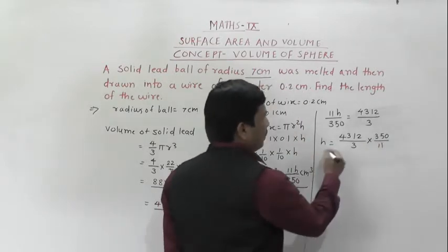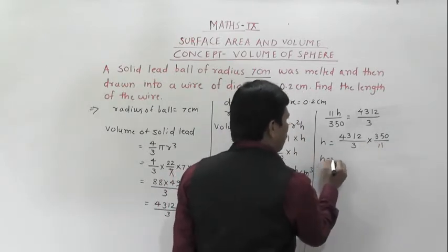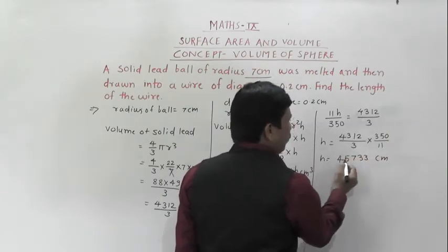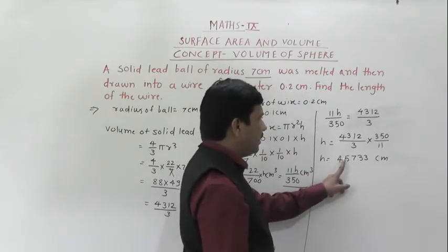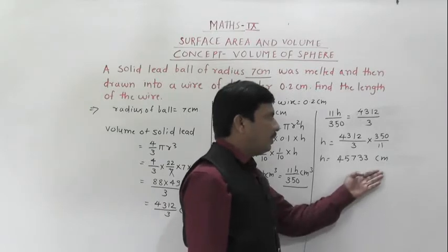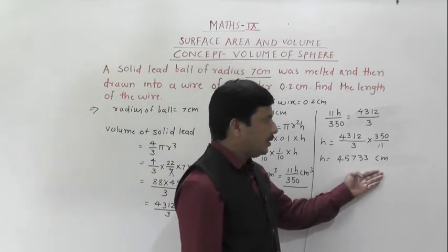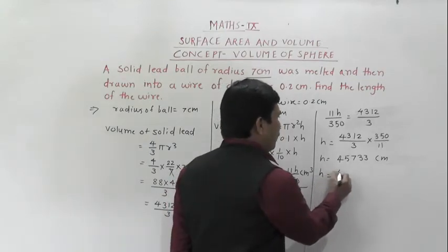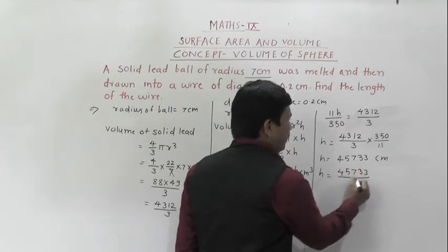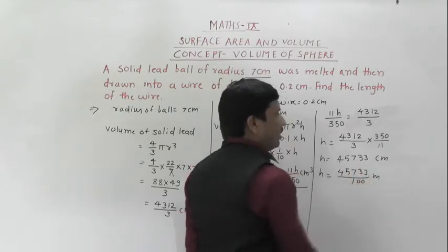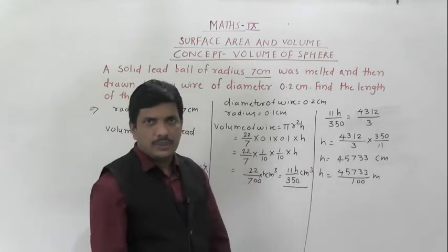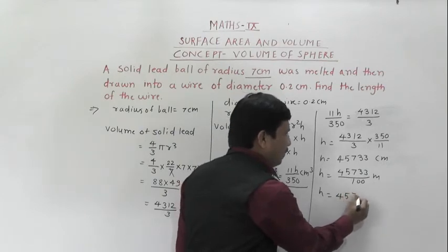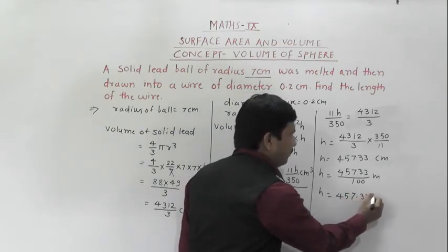So h equals 4312/3 multiplied by 350/11. When you do the calculations, h equals 45,733 centimeters. We can also express this in meters by dividing by 100. So h equals 45,733 divided by 100, which gives 457.33 meters.